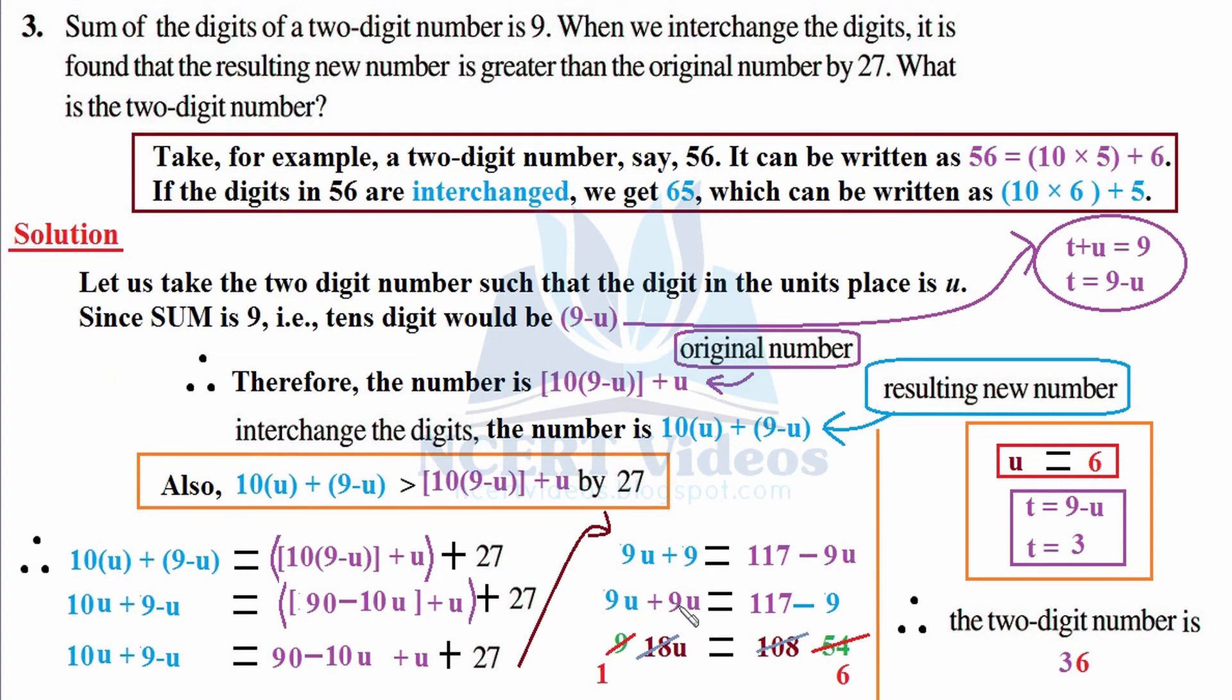9u + 9u, same sign, we are going to add it up, and sign remains unchanged. 18u equals 117 - 9 = 108. Cancelling: 2×9 = 18, 2×5 = 10, so we get 5. We were left with 8, so 2×4 = 8. Again you can cancel with 9: 1×9 = 9, 6×9 = 54. In this way u = 6.